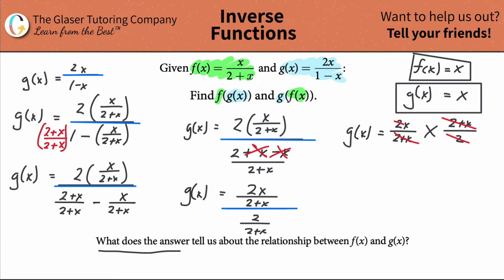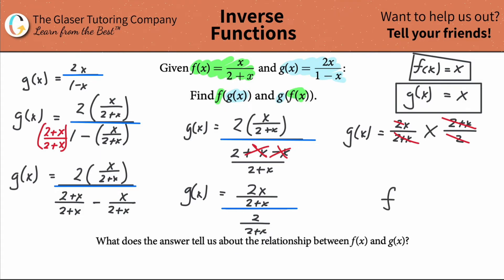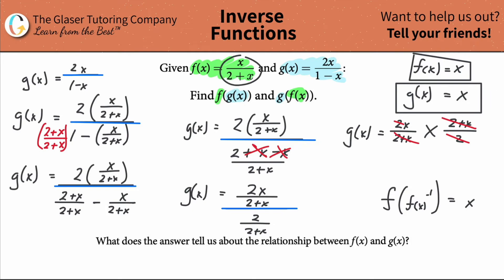So what does the answer tell us about the relationship between f of x and g of x? It tells us that they're inverse functions of one another. When you take a function composed with its inverse, it just equals x — the inverse undoes the f function. This is proving that g of x is the inverse of f of x, and f of x is the inverse of g of x.